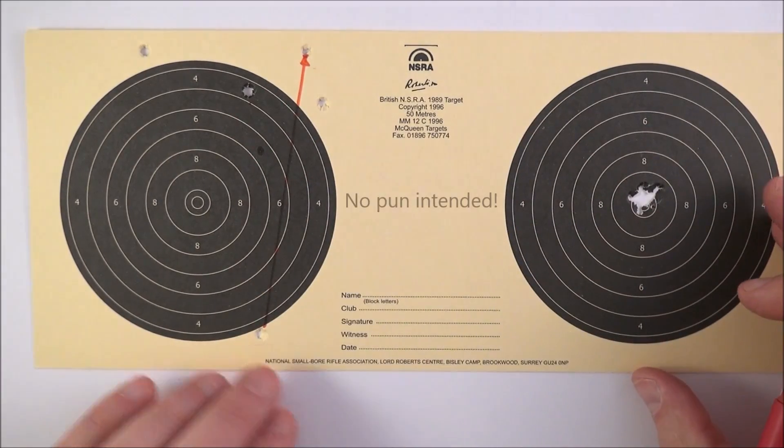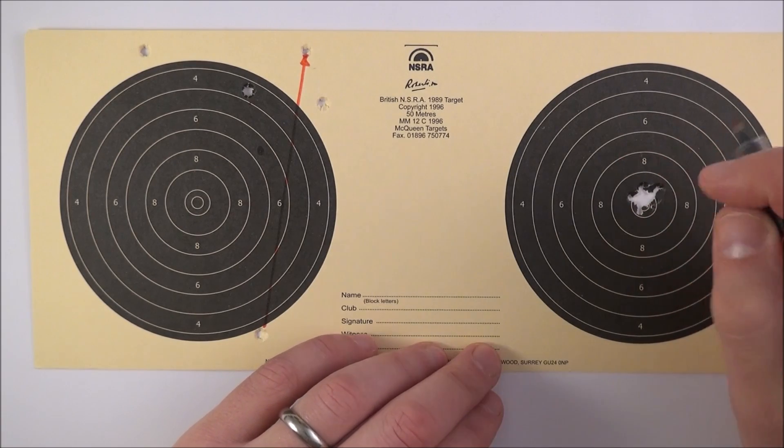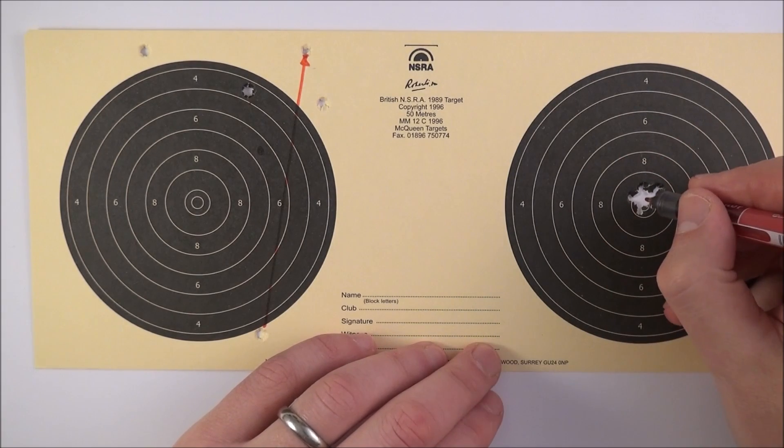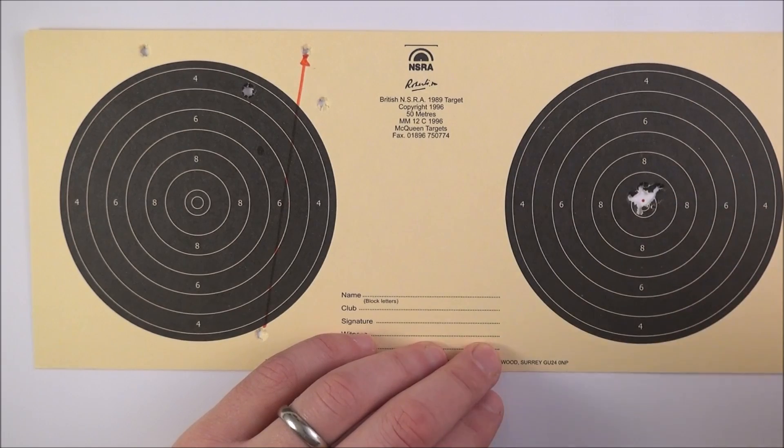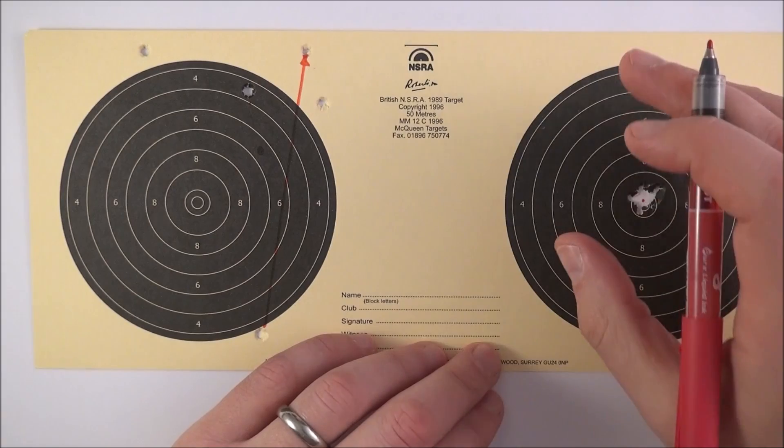What we're really aiming for when we're shooting is something to be both precise and have a very small group size like we have here, and also accurate and be on target at the very center of that target. It's these words here, accuracy and precision, which I'd like to have a look at now.